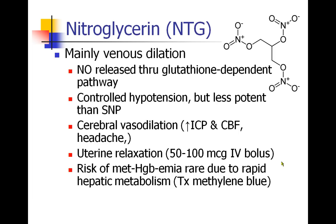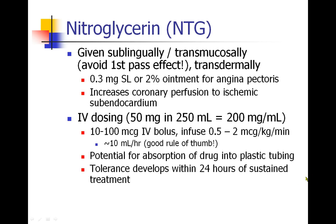50 to 100 micrograms can relax the uterus for the purpose of extracting retained placenta. There is a risk of methemoglobinemia with nitroglycerin, but it's pretty rare because it is metabolized very well. Nitroglycerin can be given through many different routes — sublingually under the tongue or transmucosally. These are beneficial because the drug is absorbed into the superior vena cava, which does not go through the liver, and therefore there's no first-pass effect. It can also be given transdermally as a paste, ointment, or patch, to increase coronary perfusion in patients with ischemia.